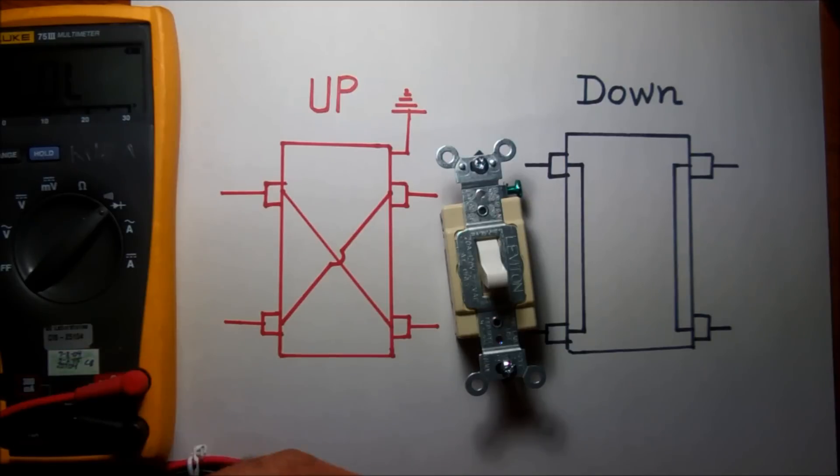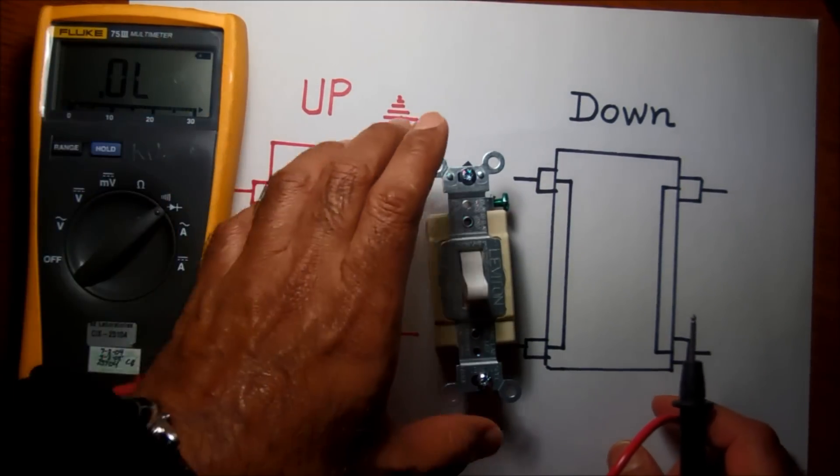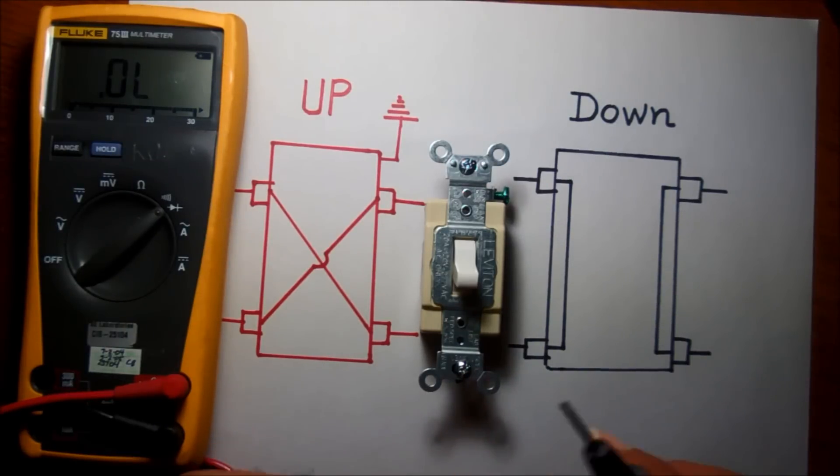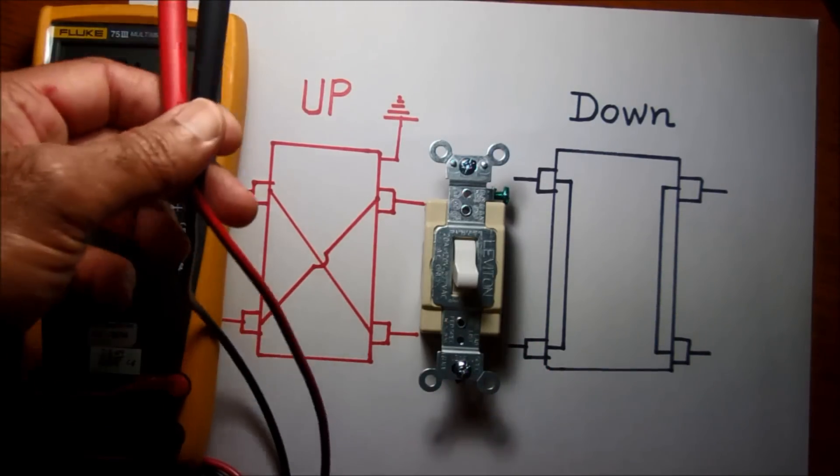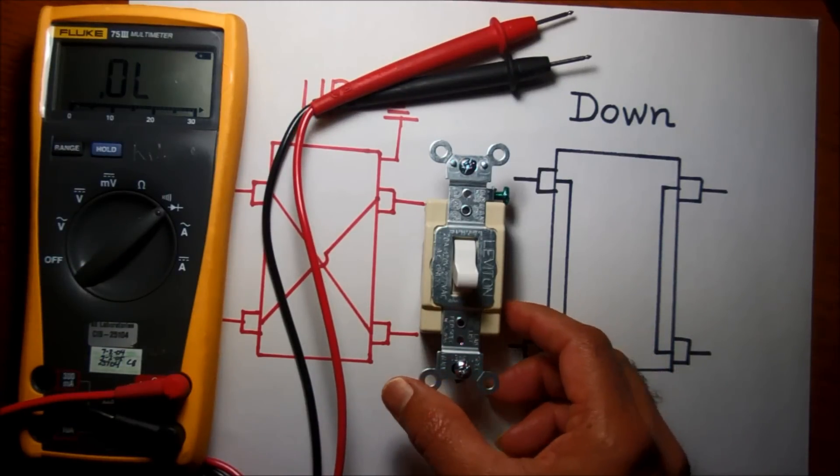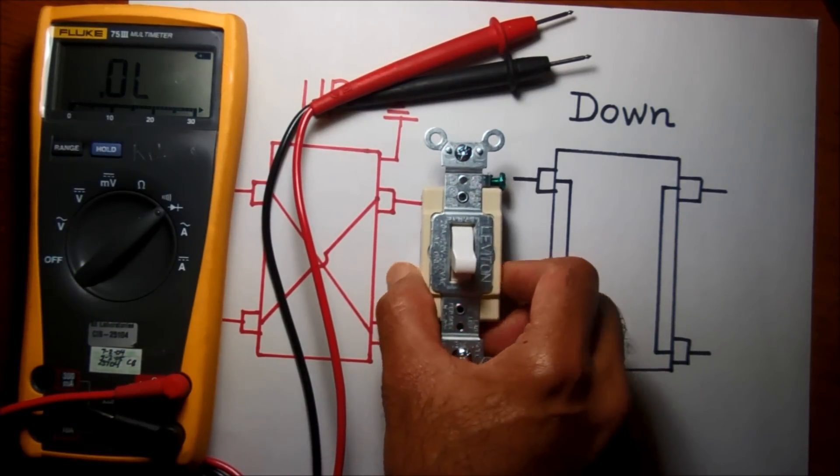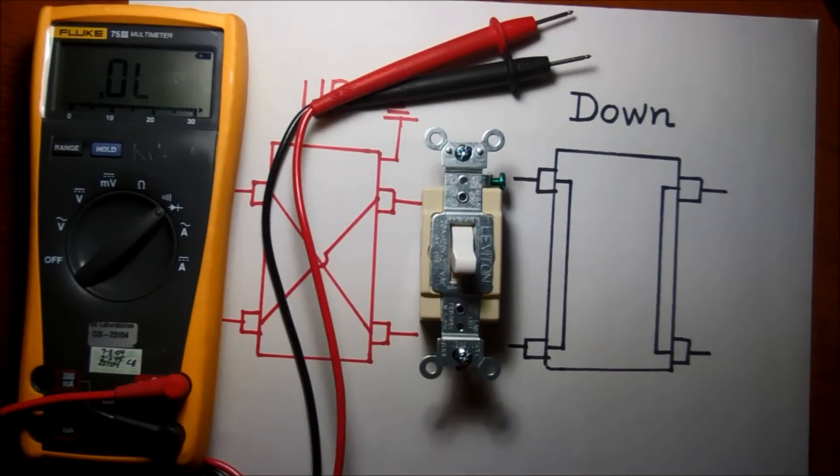The application of a four-way switch is when you want to control the light from more than two locations. If you want to control one light bulb with two switches, you will use three-way switches. If you want to control from three places, you need this four-way switch and two other three-way switches.